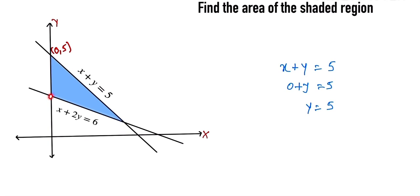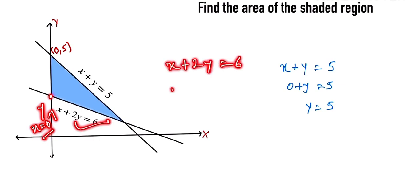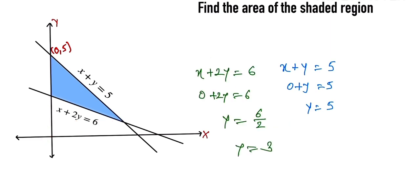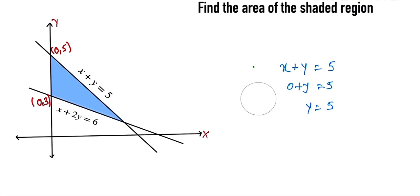Notice this point — it is also located on the y-axis, so x is equal to 0. We put x equal to 0 into the equation x plus 2y is equal to 6, and we find the value of y.